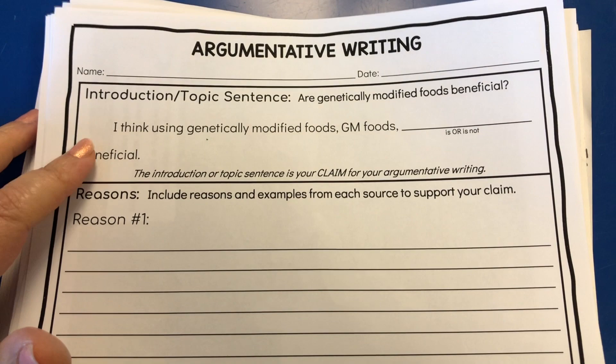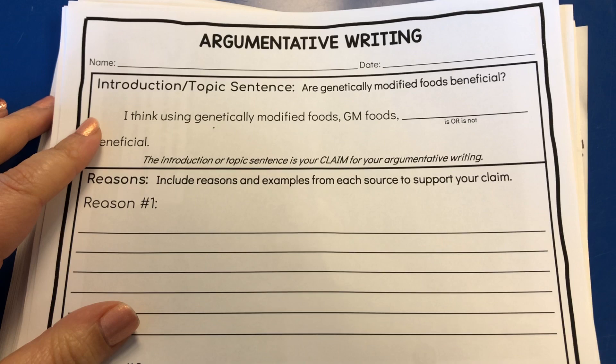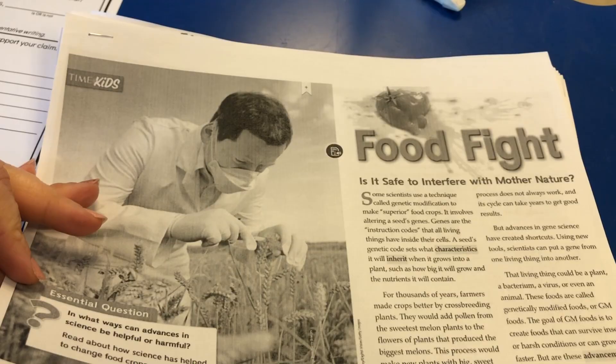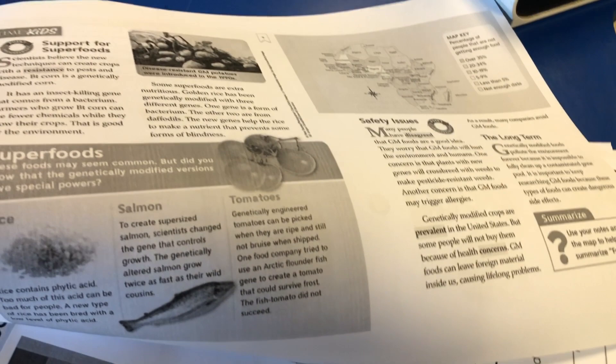After that, students got their argumentative writing planner. We reviewed the essential question for the argumentative prompt: 'Are genetically modified foods beneficial?' — since this group hasn't finished that essay. I printed out the sources so students could use a highlighter to highlight the benefits and problems of genetically modified foods. The first source is the shared read and the second is the anchor text. We finished annotating the first source, highlighting benefits in green and problems in yellow, and will continue with the second source tomorrow.